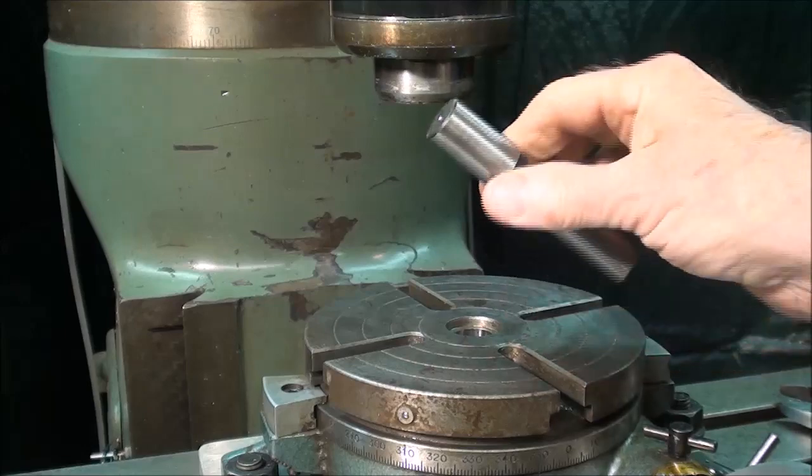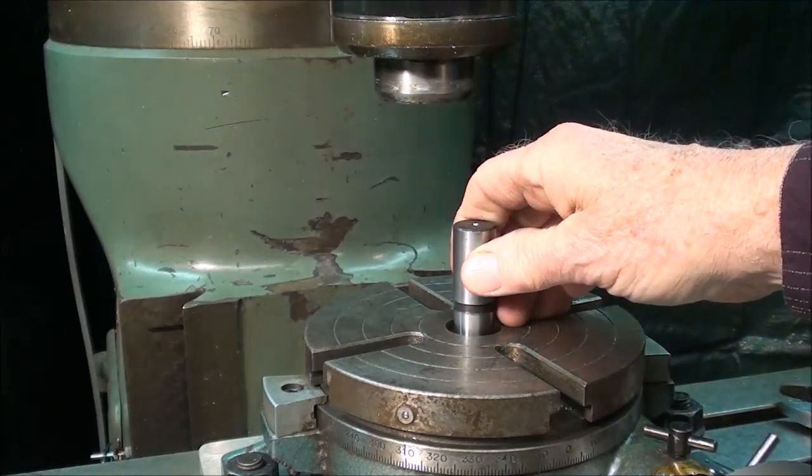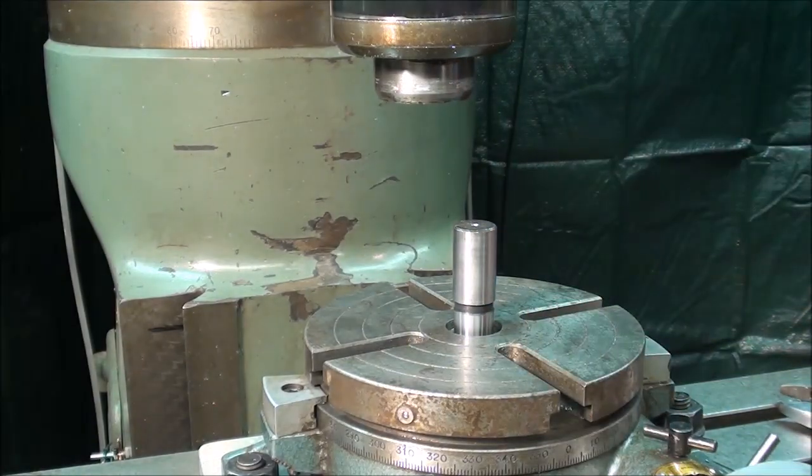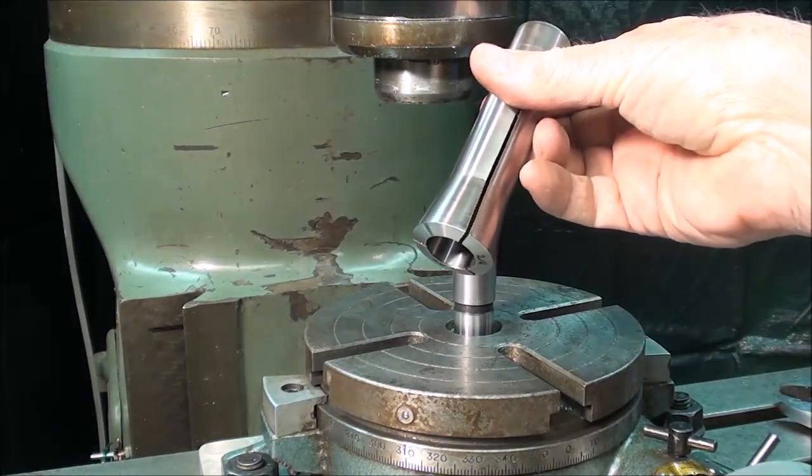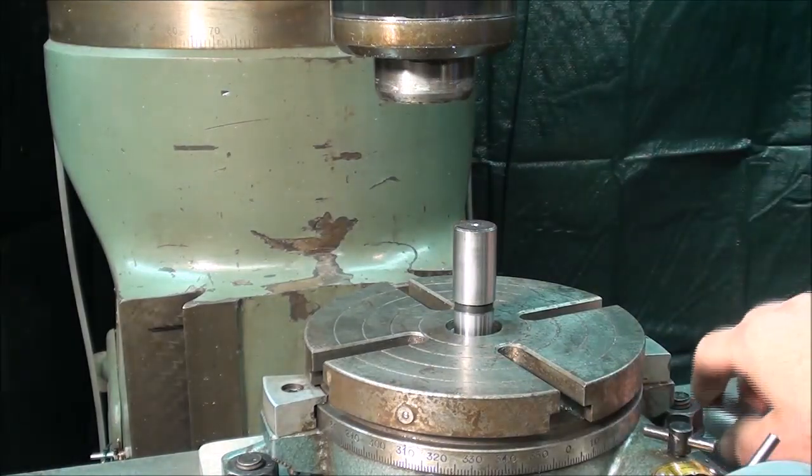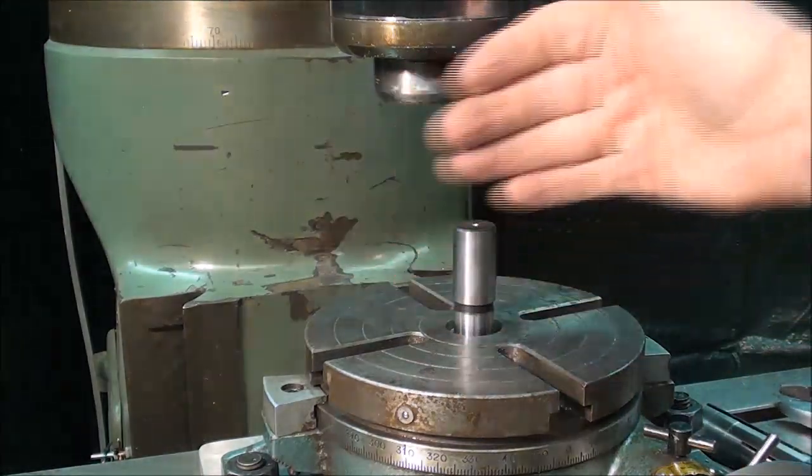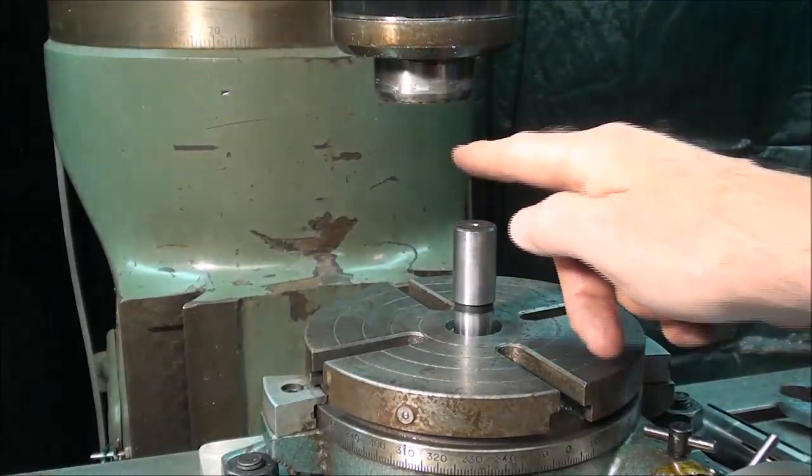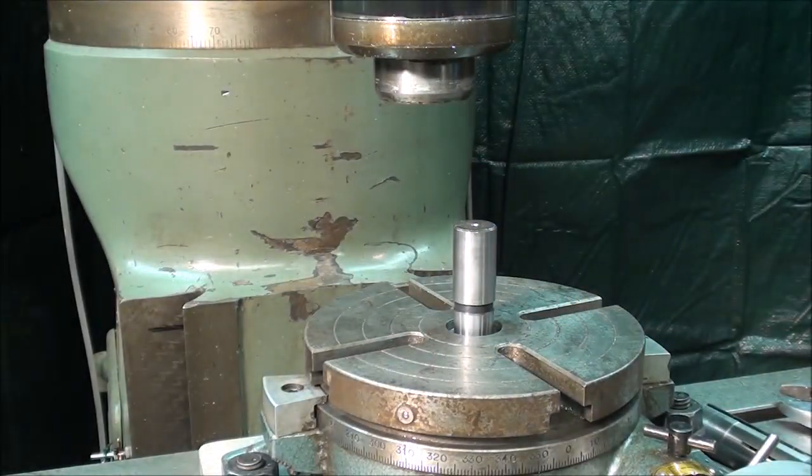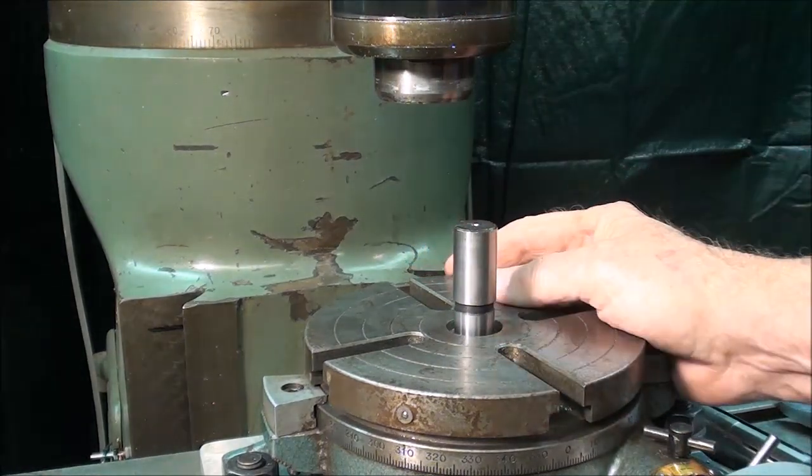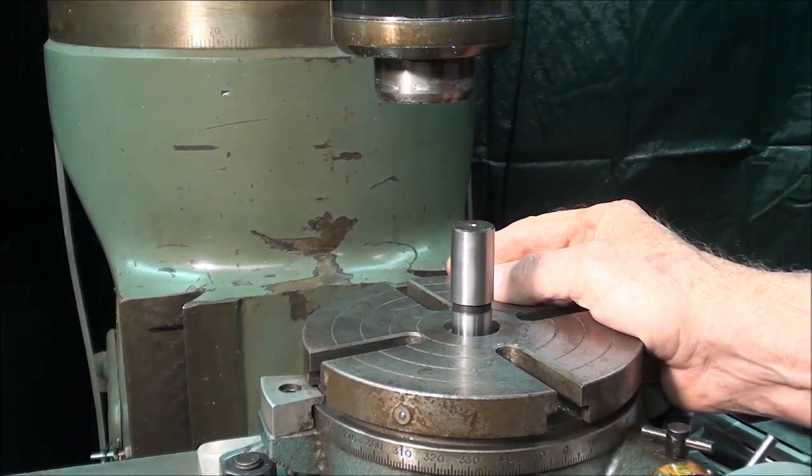Here's a three-quarter R8 collet, which I'm going to put in the spindle here momentarily. And all I'm going to do, and make sure everything's clean when you do this, no chips in there, wipe this off, and I'm going to tap it down in there. Then I'm going to put the collet in the spindle, and basically, using the X and the Y cranks, move this into position, so it lines up perfectly with the collet.